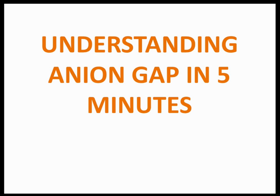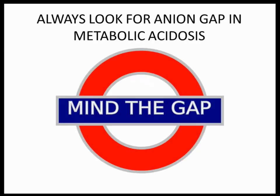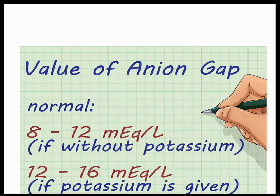Hello friends. In today's lecture we'll see what is anion gap in five minutes. Whenever you have a patient with high anion gap with metabolic acidosis, look at the anion gap — always mind the gap. The normal values of anion gap are 8 to 12 if you are not considering potassium for calculation, and 12 to 16 milliequivalents per liter if you are using potassium.